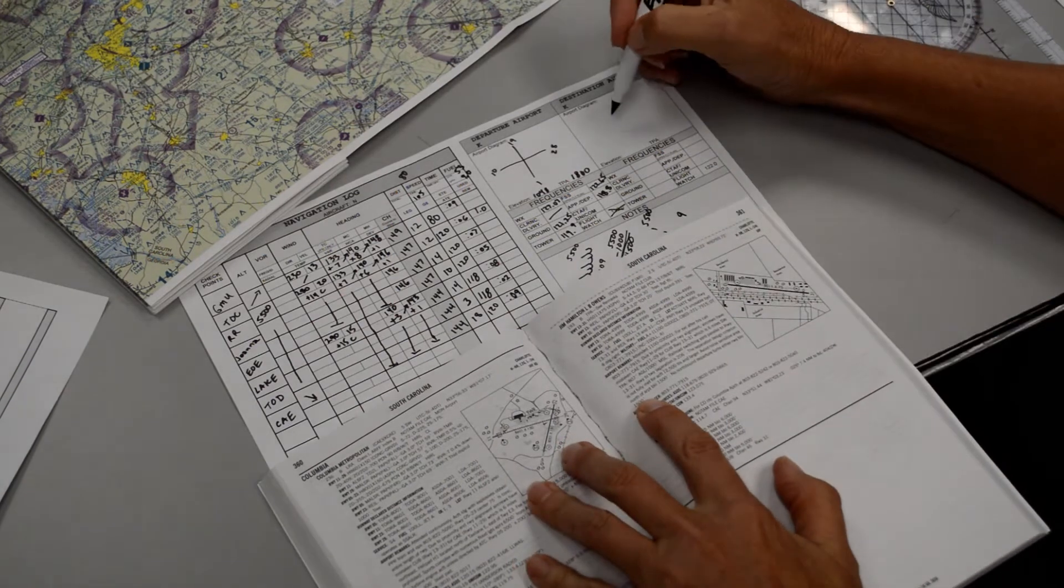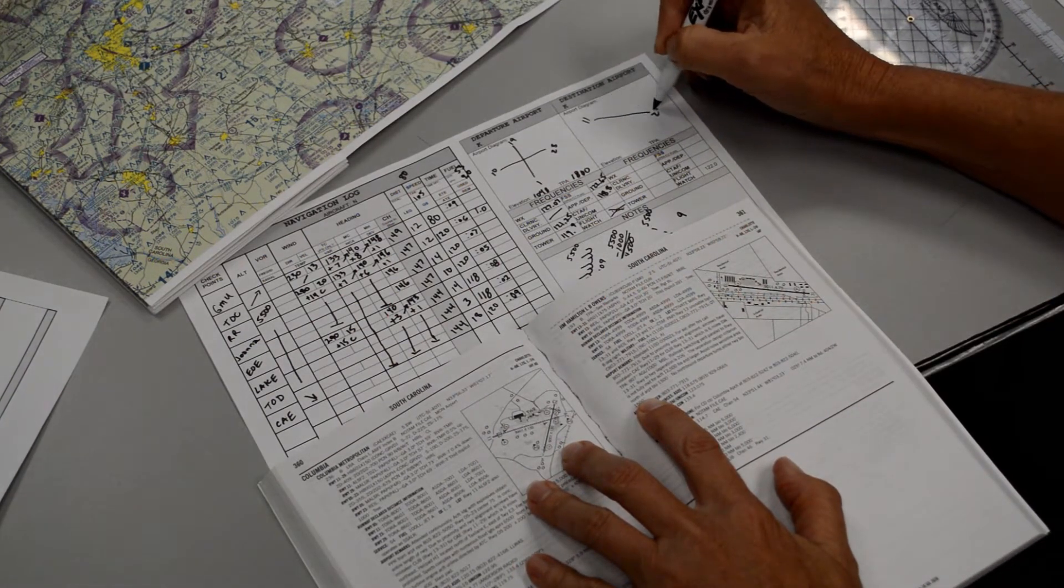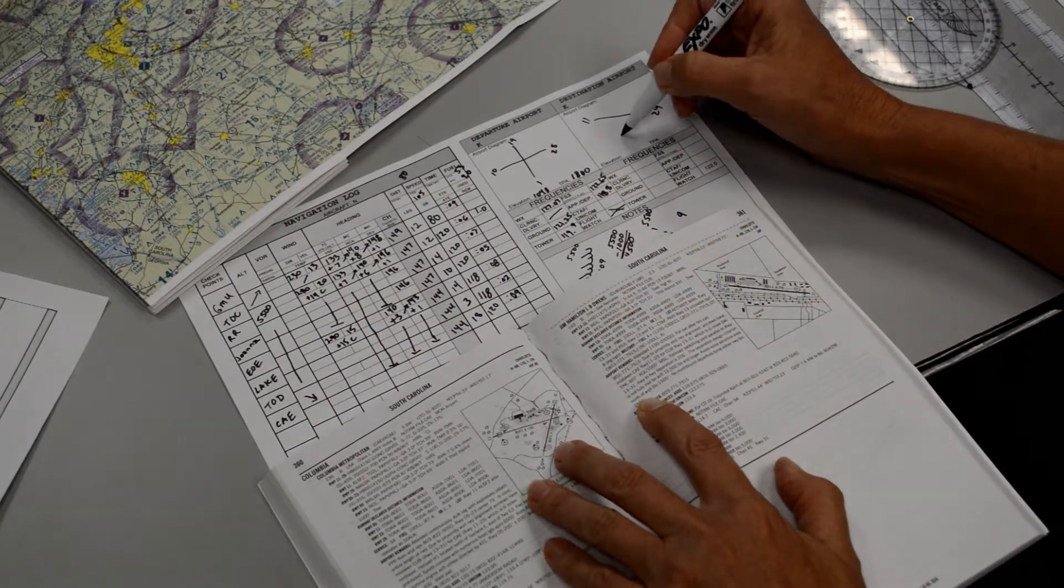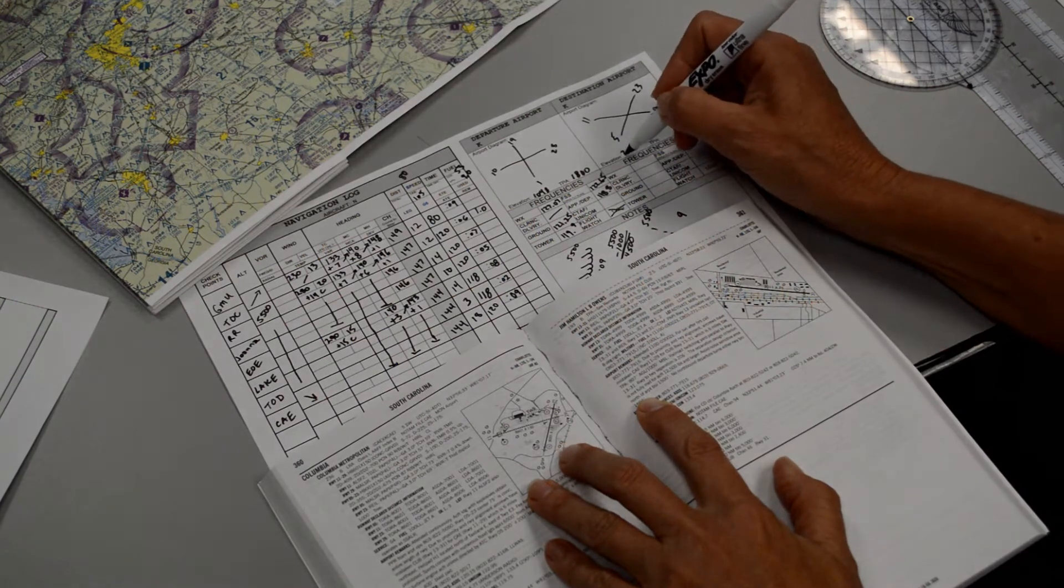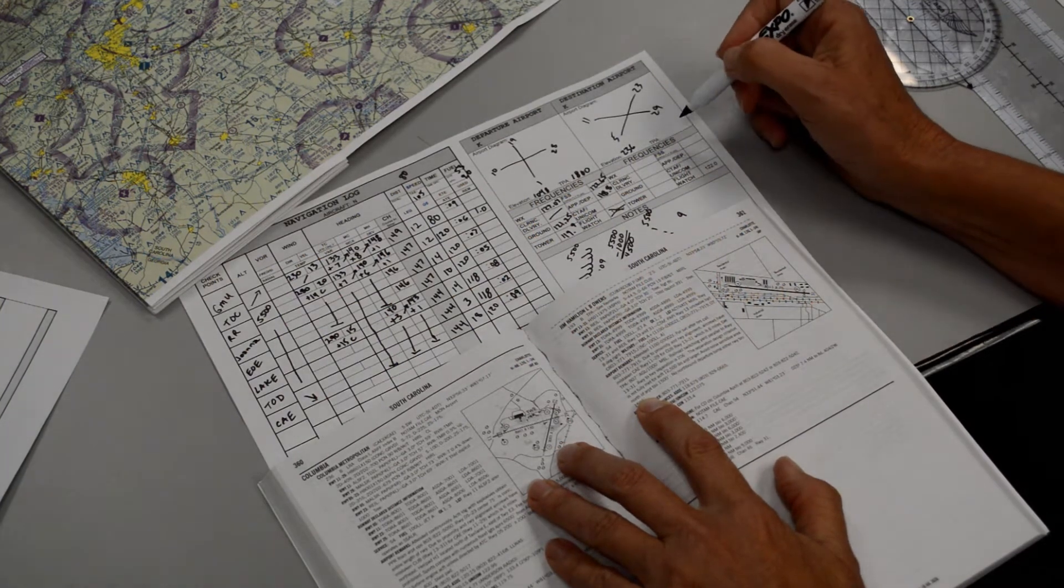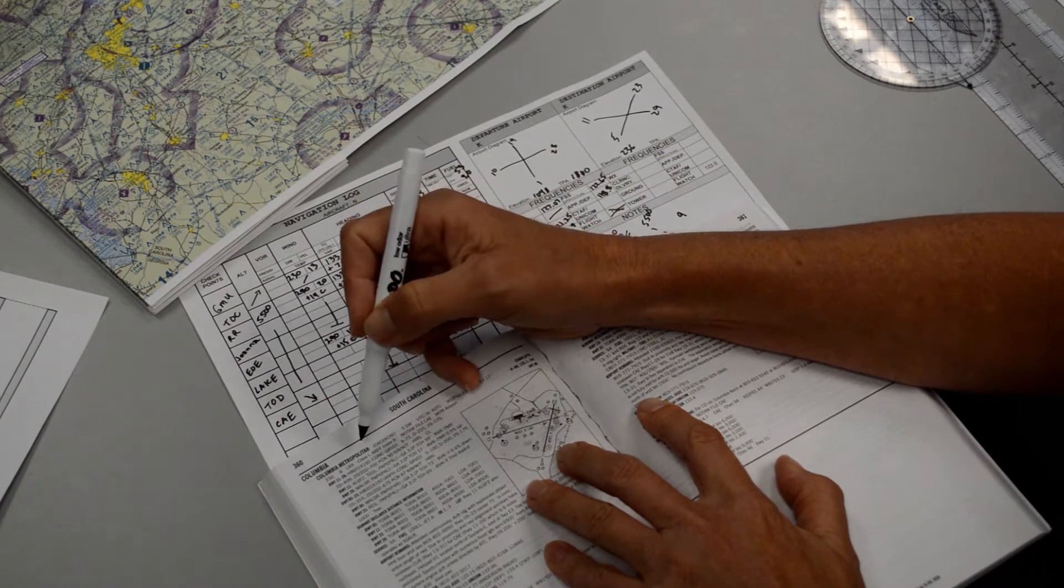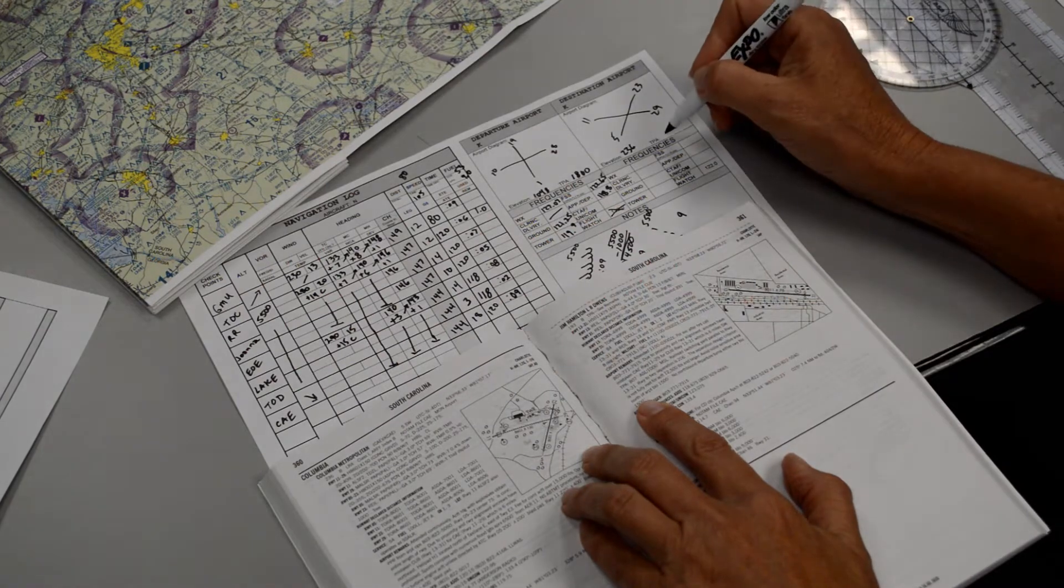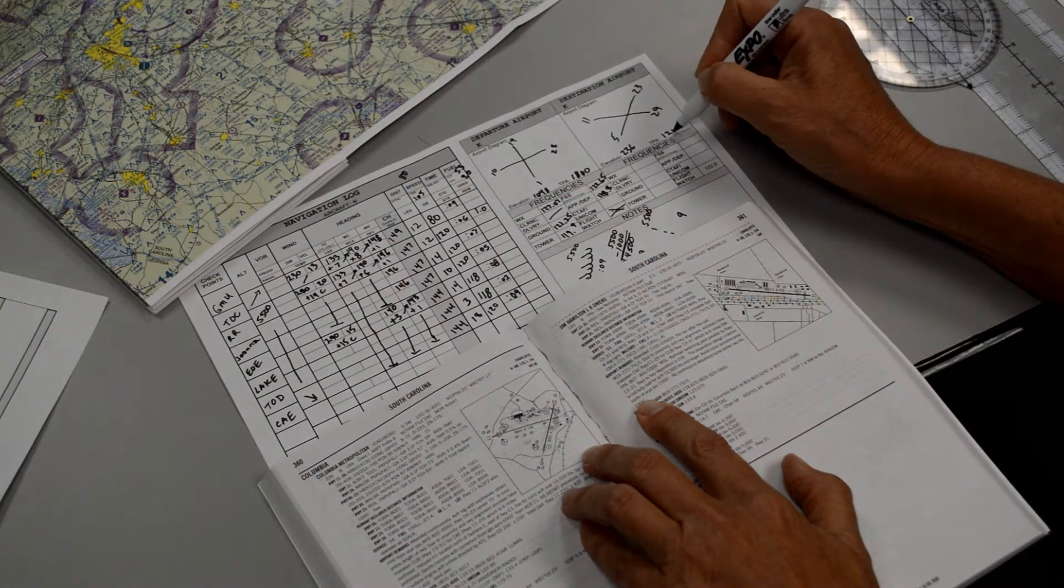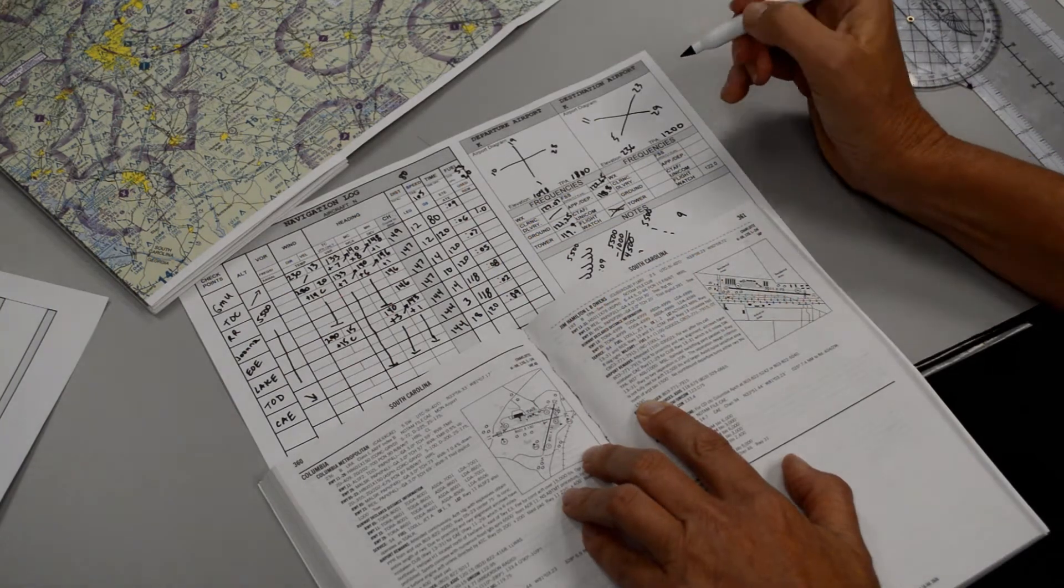Then we can go to the Columbia Airport and do the same thing. So here's Columbia. We have Runway 11 and 29, and we have Runway 5 and 23. The airport elevation is 236. The traffic pattern looks like it's a normal traffic pattern. I don't see anything that tells us to look down in the remarks. So traffic pattern would be 1200, which is just 1000 above the field elevation.